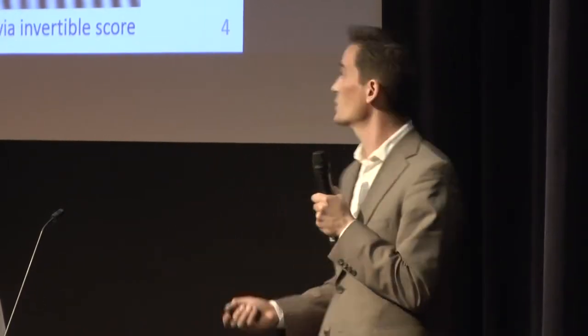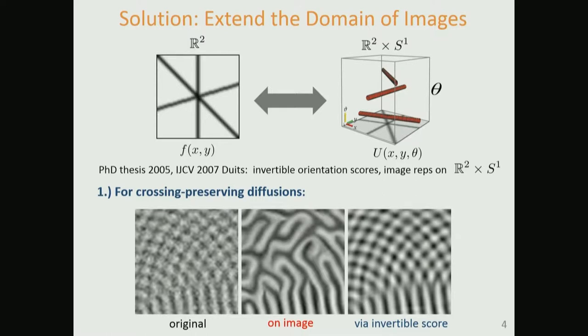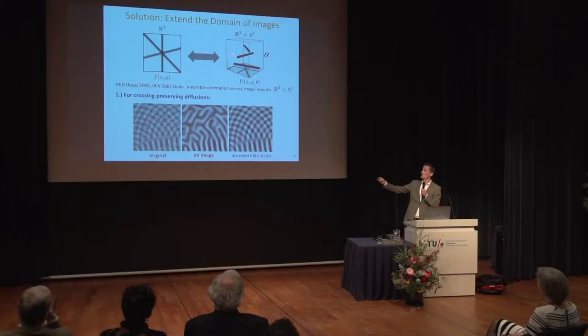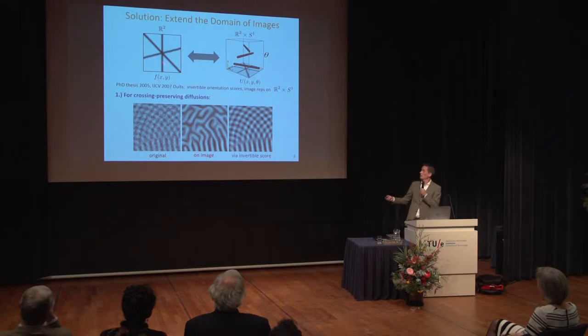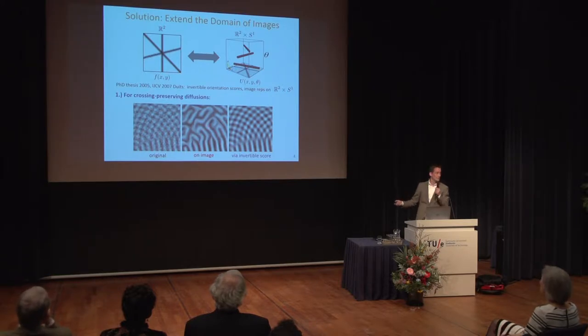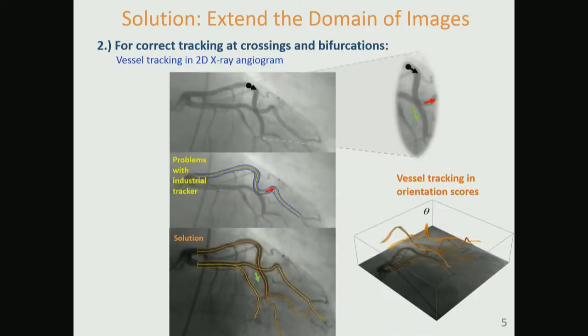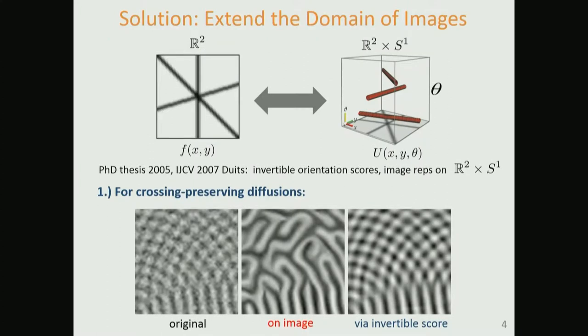Why would you want to do that? All elongated structures involved in a complex crossing are manifestly disentangled in position and orientation space — there are no crossings if you enlarge the domain of your images. This is useful for crossing-preserving diffusions. If you do nonlinear diffusion directly on the image domain, you get artifacts because it's steered by the direction of the gradient, which is not well-defined there. Whereas in the extended space of positions and orientations, these particles cannot collide and we get good enhancement.